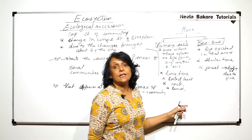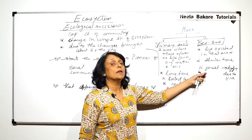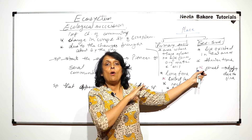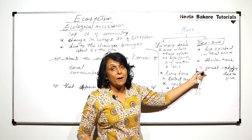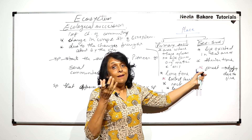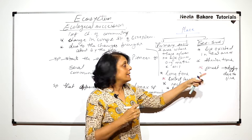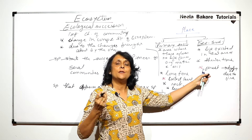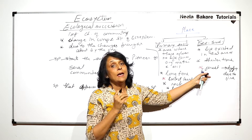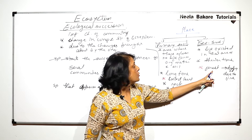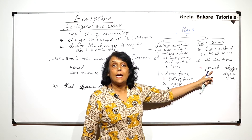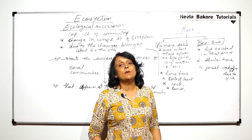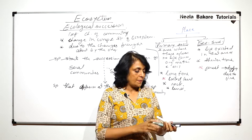Secondary succession occurs in places like a forest destroyed due to fire. There were plants and animals, but because of the fire all living organisms were destroyed — yet life forms existed there before. That means there would be some organic matter, some soil — everything present. If succession starts in such an area, we call it secondary succession.